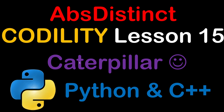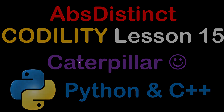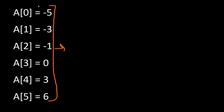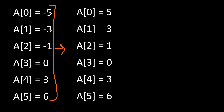We are given an array of numbers set in non-decreasing order, so it's in increasing order, and if we take the absolute values of these numbers from our array we can count the number of distinct elements.